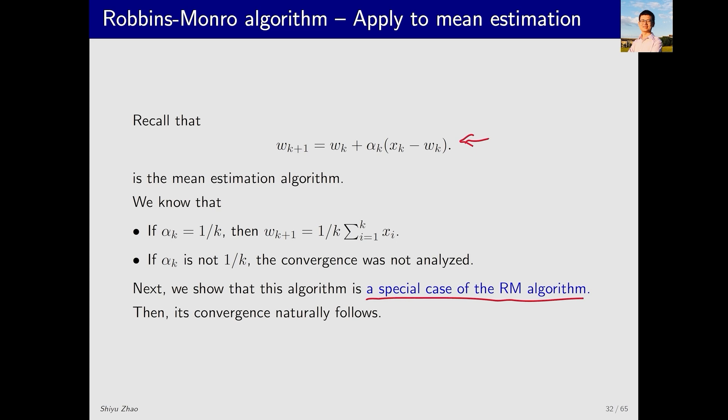Let's see why it is an RM algorithm. Consider this problem. We have a function g(w), where g(w) equals w minus E[x], where E[x] is the expectation of a random variable, a constant. This is a simple function of w minus a constant. If we solve g(w) equals zero, we get w star equals E[x], thereby obtaining the expectation of x.